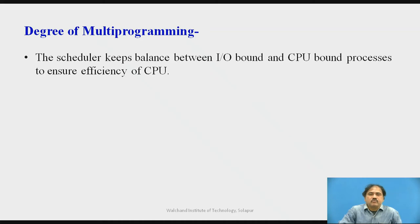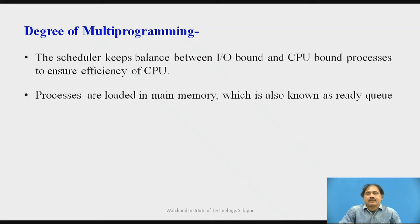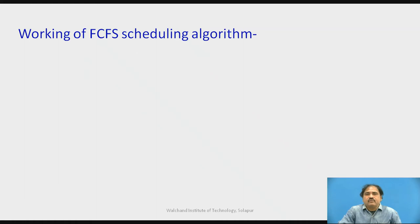Moreover, while bringing all these processes for execution into the ready queue, we have to always consider a balance between IO-bound processes and CPU-bound processes, so that the CPU provides very high efficiency of execution. The processes we load into main memory — also called the ready queue — are then put from the ready queue into the running queue.